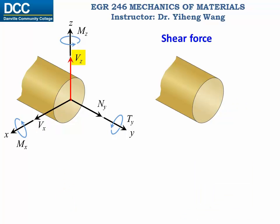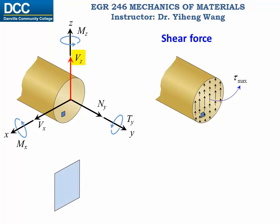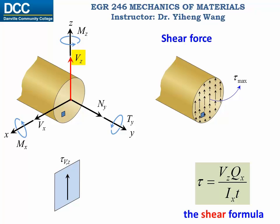For shear force Vz along the z-axis, it also creates a nonlinear distribution of shear stress. The maximum shear stress occurs at the centroidal x-axis, and it is zero at the two edges furthest away from the x-axis. For an arbitrary location, the shear stress is determined through the shear formula, but both Q and I are calculated with respect to the x-axis.